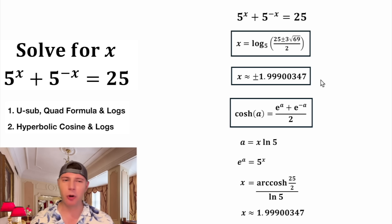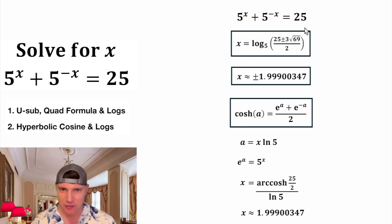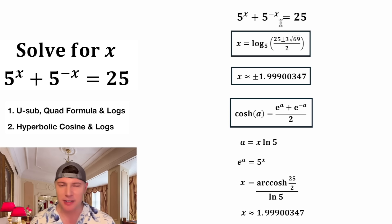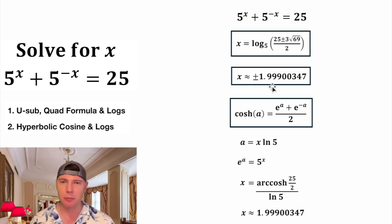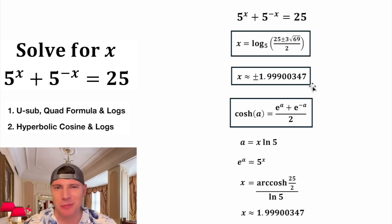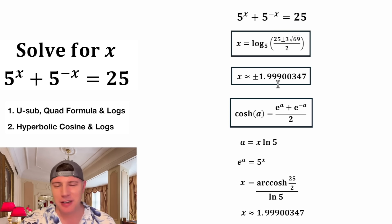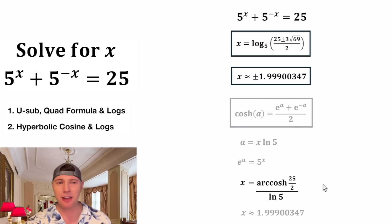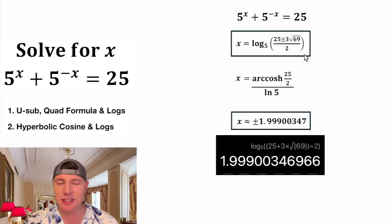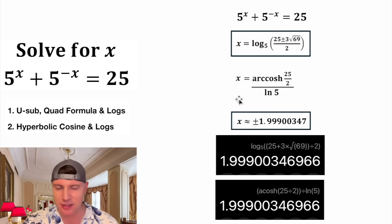The only difference is we only got the positive version here. But given the nature of this problem with x and negative x, we can deduce that the answer would be plus or minus that same value. Which method did you like more? Most likely you would use the first method, but I hope you enjoyed seeing the hyperbolic cosine method. It's interesting that both methods give the exact same value.